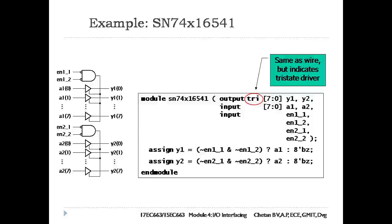There are two assign statements. The first is: 'assign y1 = (~enable1_1 & ~enable1_2) ? a1 : 8'bz' — using the conditional operator, if the condition (NOT enable1_1 AND NOT enable1_2) is true, a1 is assigned to y1; otherwise, 8-bit high impedance is assigned to y1. The second is: 'assign y2 = (~enable2_1 & ~enable2_2) ? a2 : 8'bz' — similarly, if the condition is true, a2 is assigned to y2; otherwise, 8-bit high impedance is assigned.